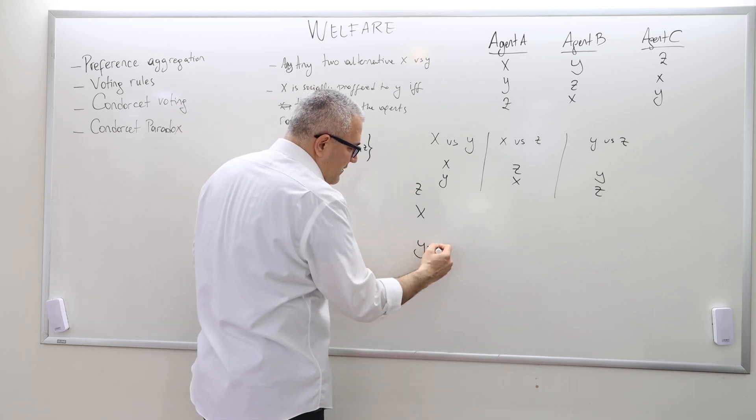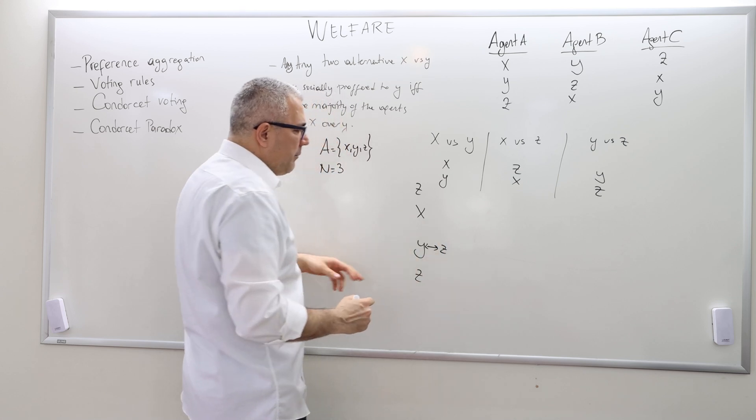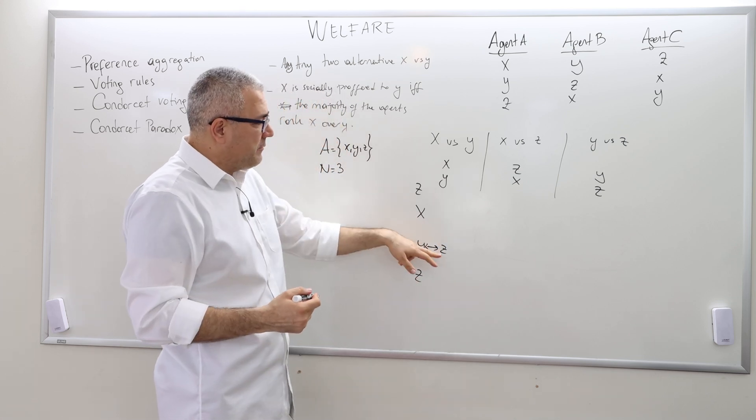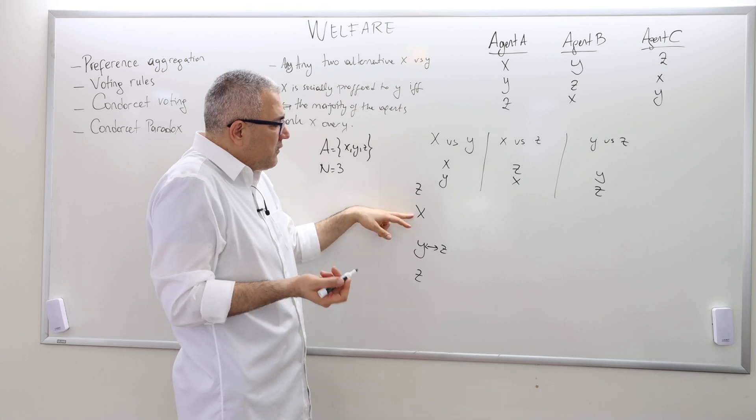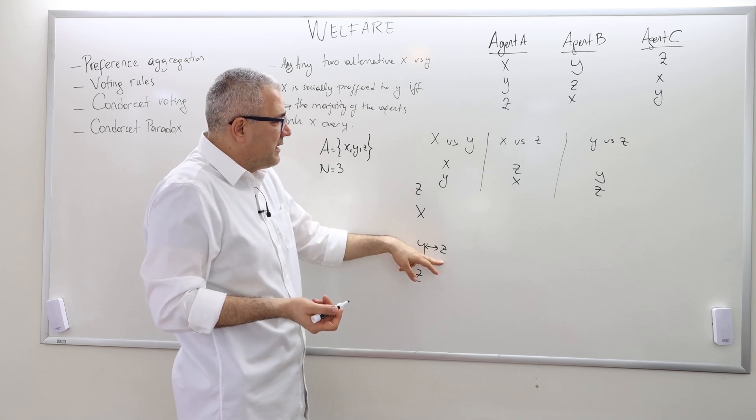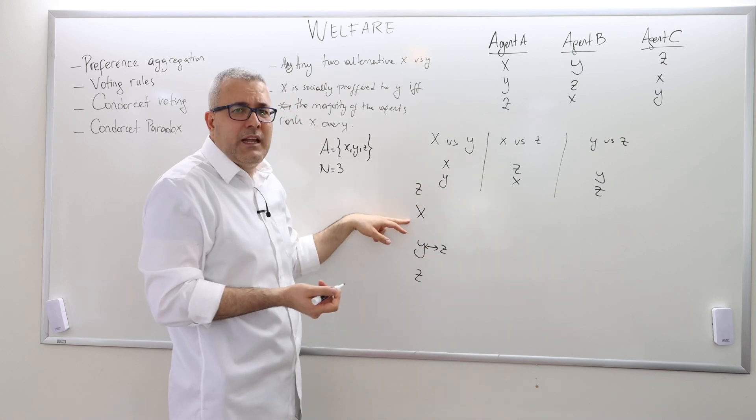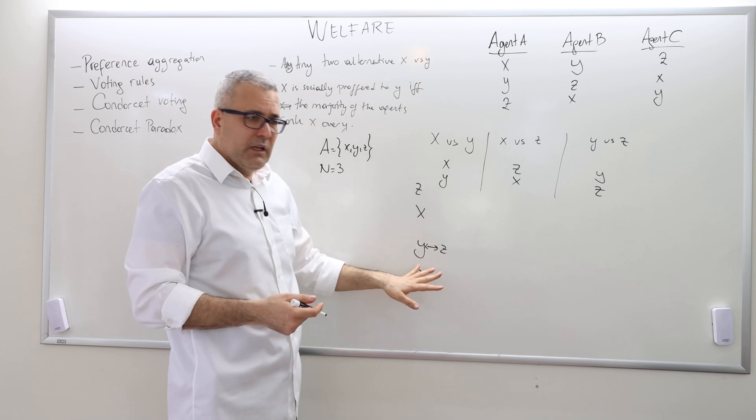So we can't say Y and Z are indifferent, because it implies X is better than Z if Y and Z are indifferent. And if X is better than Y, it automatically means X should be better than Z. But we know that Z is better than X. So it's not equivalence.